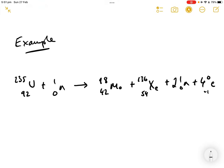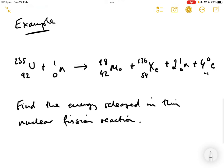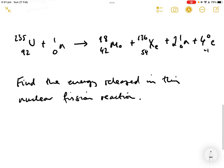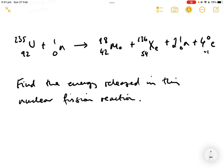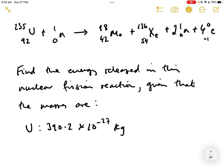The question then is, find the energy released in this nuclear fission reaction. In order to do that, you need to be given the precise masses of the various particles. So, the masses are: for uranium, 390.2 times 10 to the minus 27 kilograms, that's the mass of a single uranium-235 particle in the nucleus.